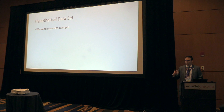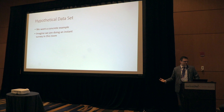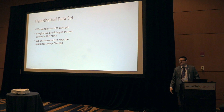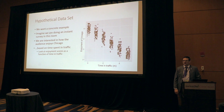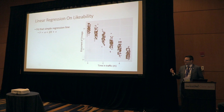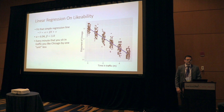We want a concrete example, so let's do an instant survey. We're interested in how everybody enjoys Chicago — our independent variable is how much time you spend in traffic, which is pretty atrocious here. We'll look at enjoyment scores as a function of time in traffic. Surprising no one, enjoyment drastically decreases the more time you're in traffic. If you do a simple linear regression, you fit that line to your data, get an intercept and slope parameter — every minute you sit in traffic, your enjoyment of Chicago decreases.